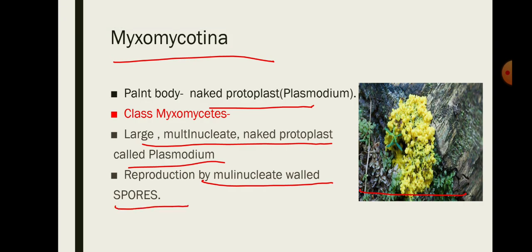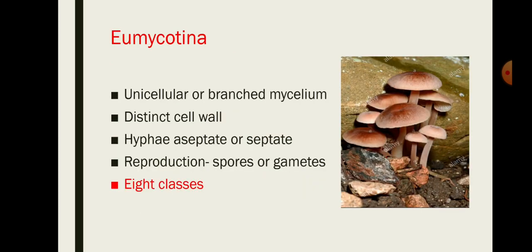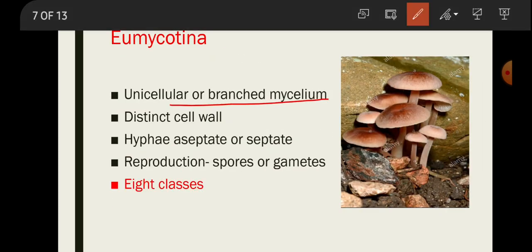The second subdivision, Eomycotina, has branched or unbranched mycelium with a distinct cell wall. The hyphae may be septate or aseptate. They can reproduce by spores or gametes, and Alexopoulos divided Eomycotina into eight subclasses.